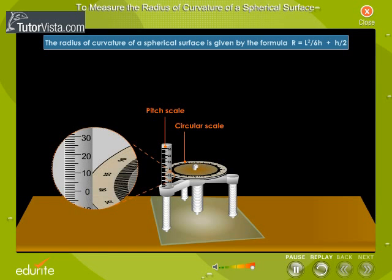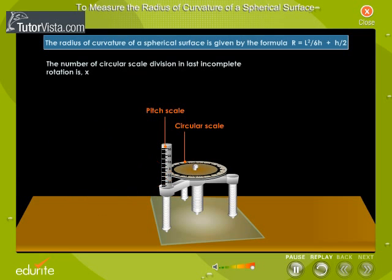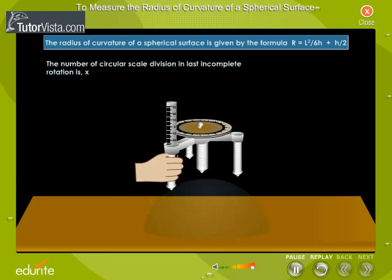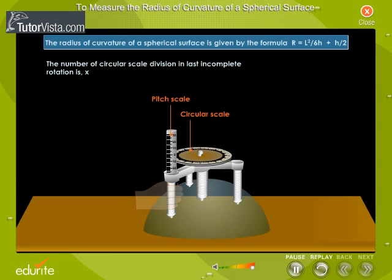Note reading of the circular scale which is coinciding with the pitch scale. Let it be B. Find the number of circular scale division in last incomplete rotation. Repeat the experiment by placing the spherometer over different parts of the given spherical surface. Calculate the height of the spherical surface using the formula.